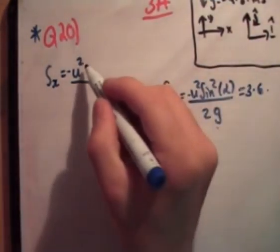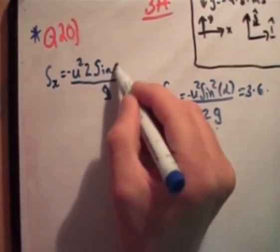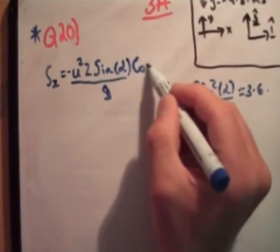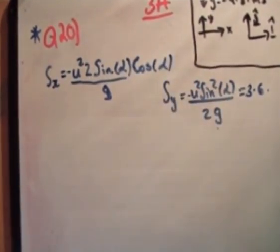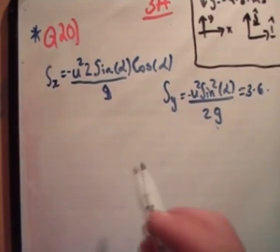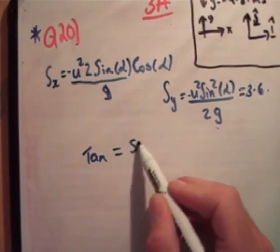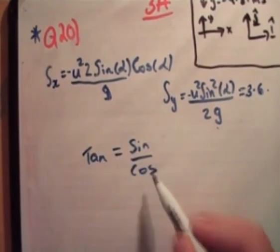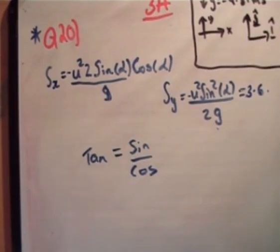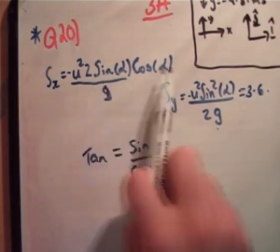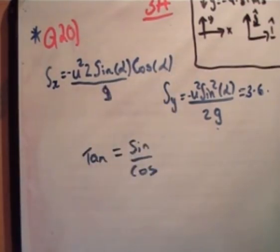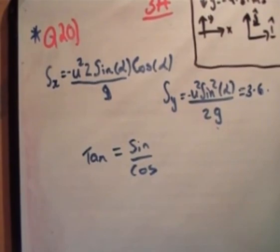So that becomes 2 sine alpha cos alpha, like so. Alright, so if we're trying to find the tan, first of all tan, right, so tan is equal to sine over cos. Now if you're asked for questions, in questions, for something like the tan, and you have quantities like sine and cosine, what you should do, basically, is divide the quantities, so that when you start crossing out all the bits and pieces, you'll get a sine on the top and a cosine on the bottom.